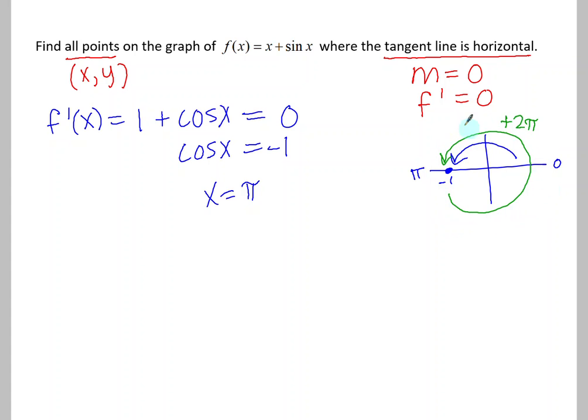We can also subtract an entire circle forever, and we still will get negative one when we plug those angles into the cosine function. So to show that we can add or subtract any amounts of circles, we say plus 2 pi k, k being any integer.